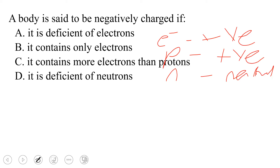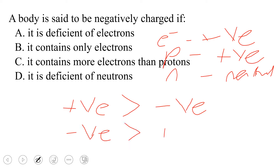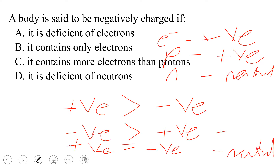When we say that a body is positively charged, it is reasonable to think that it contains more positive charges than negative charges. When we say a body is negatively charged, that means it contains more negative charges than positive charges. And when we say a body is neutral, it contains equal numbers of positive and negative charges. So this is neutral, this is negative, and this is positive.